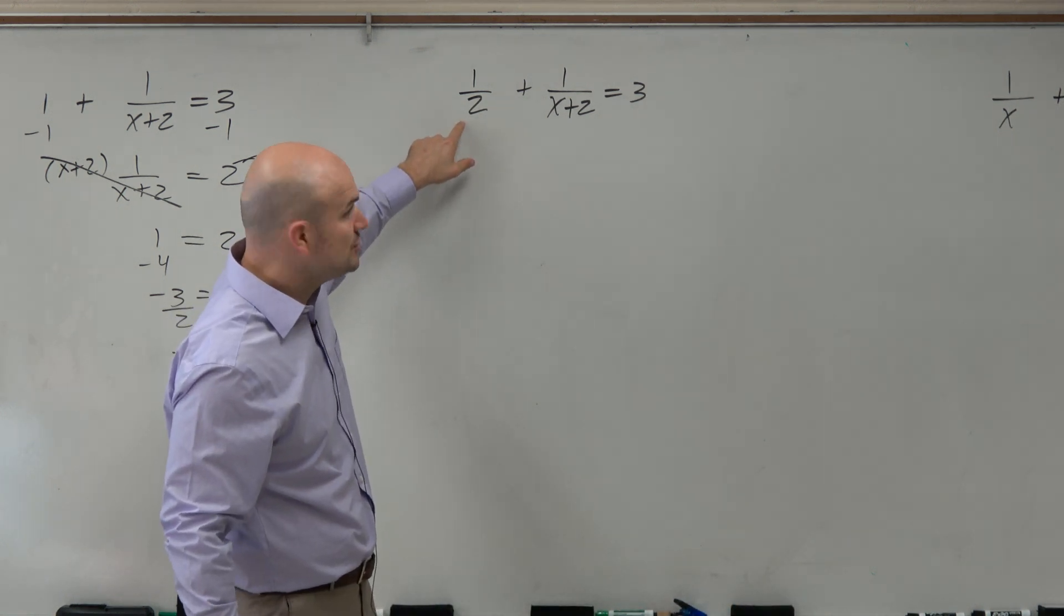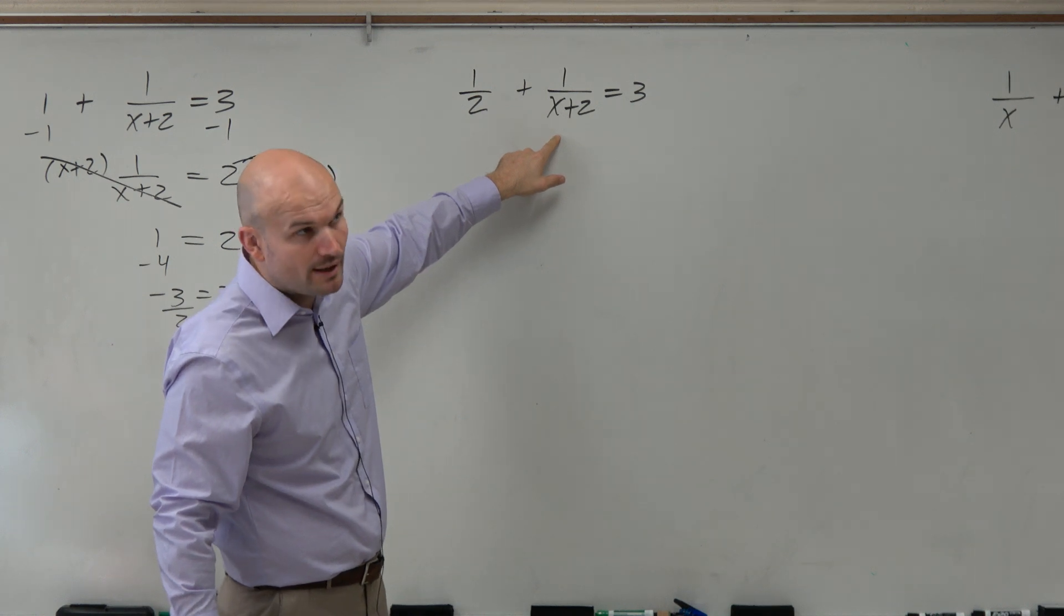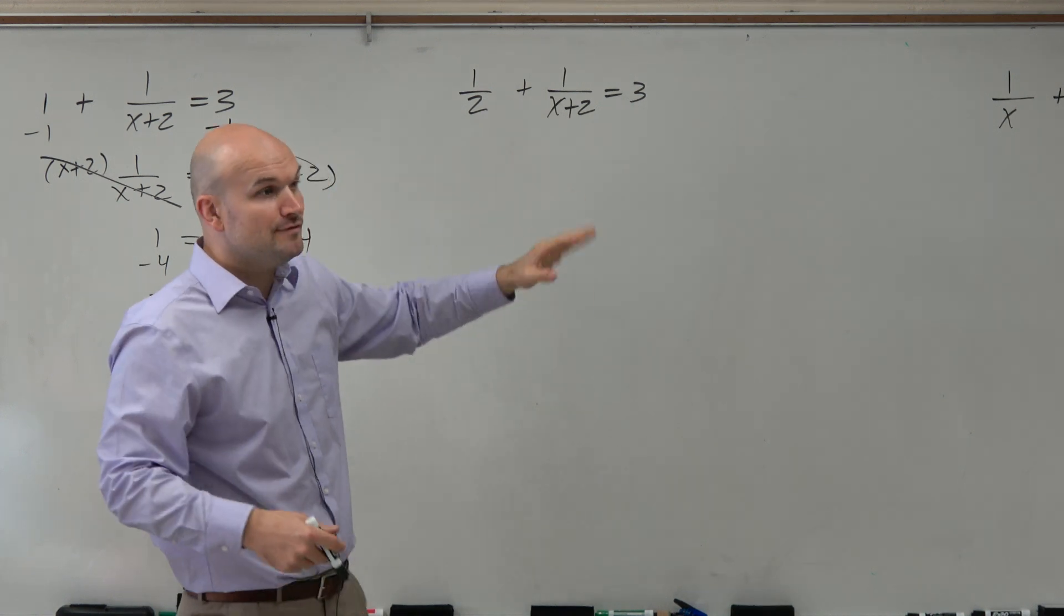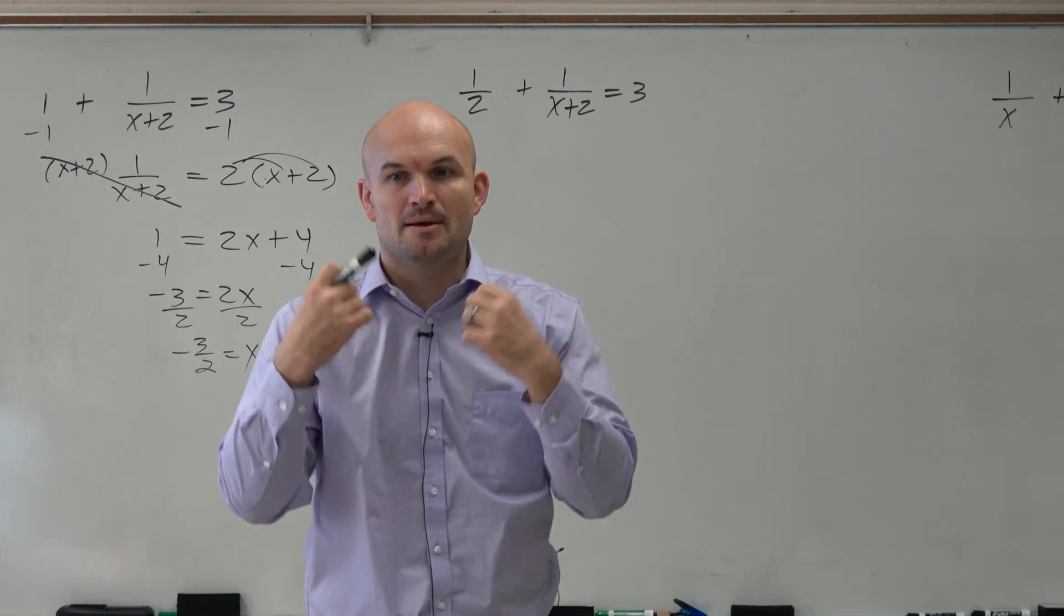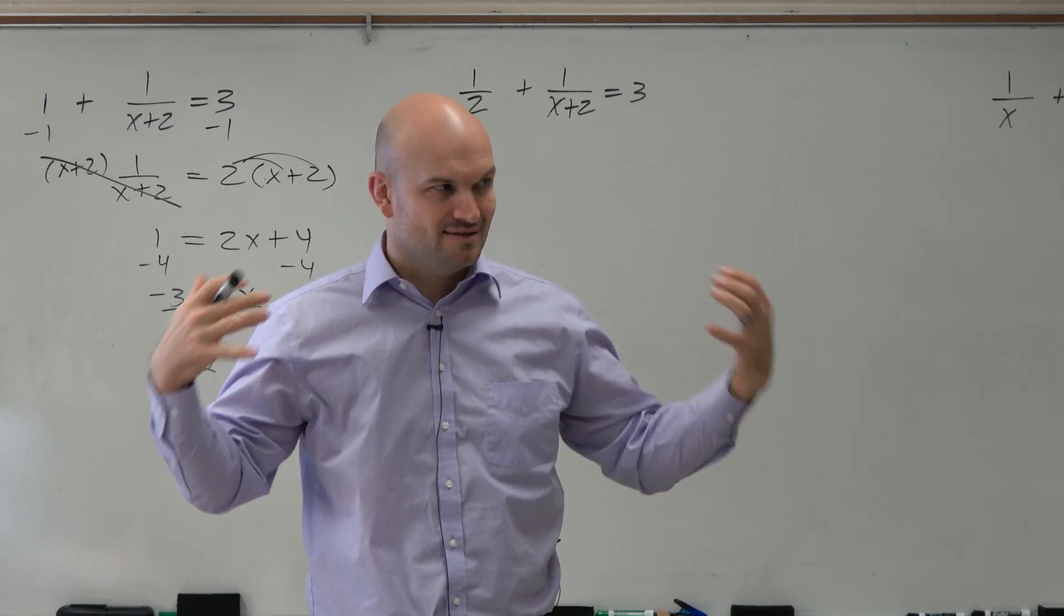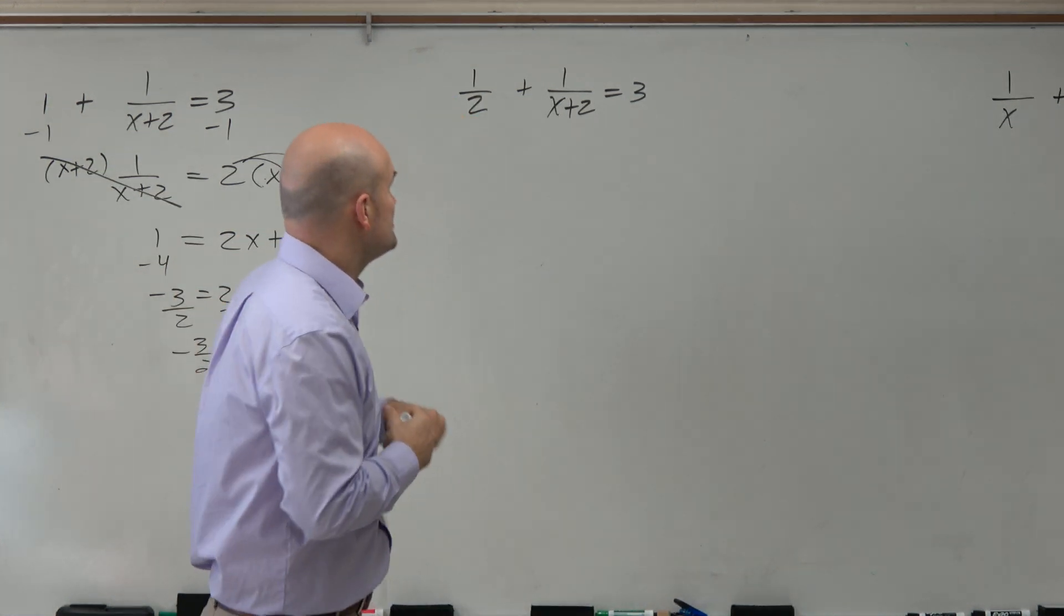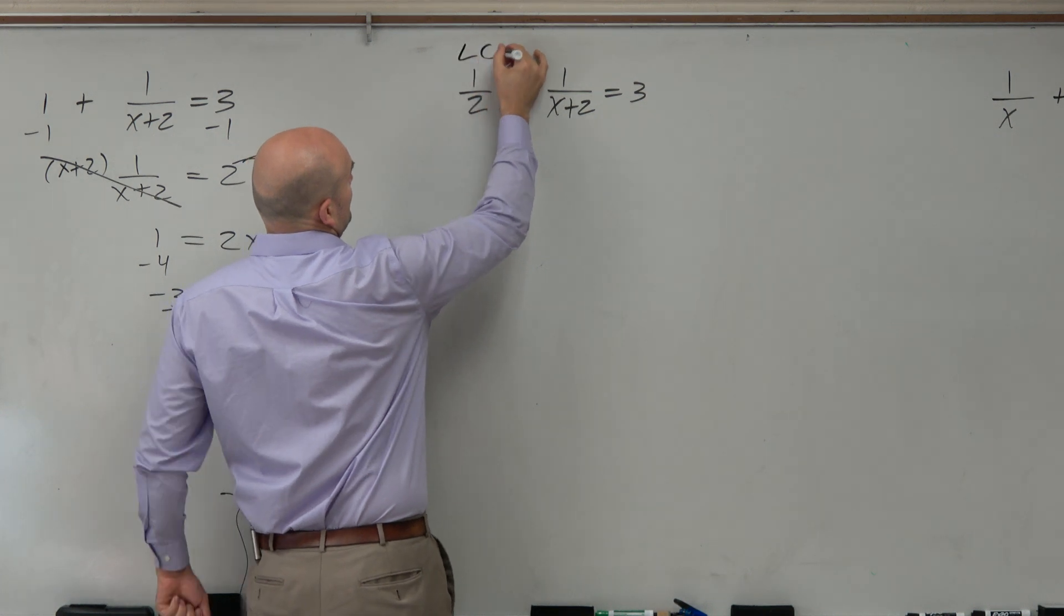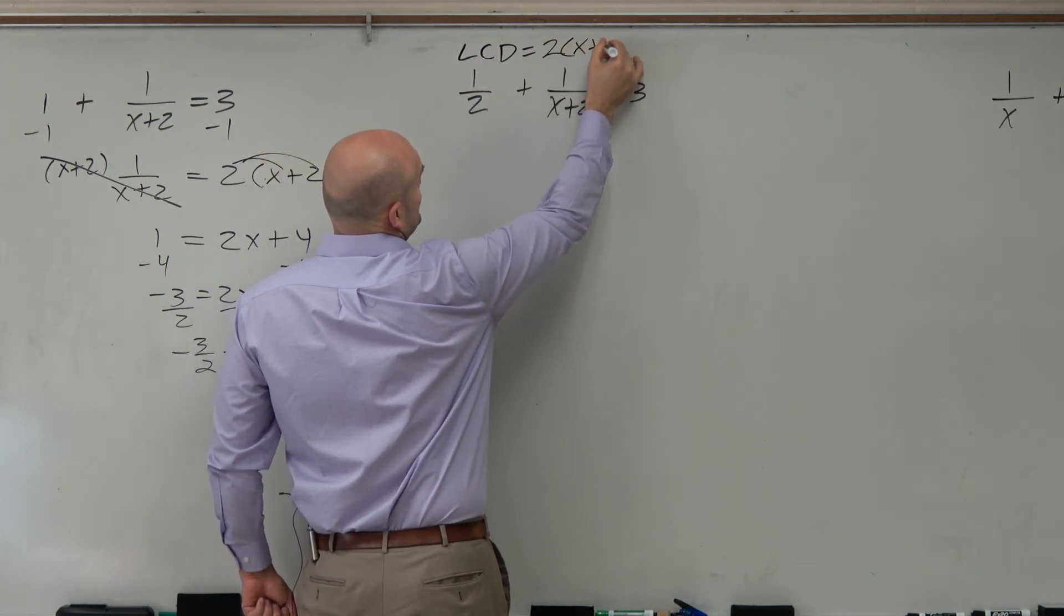The factors here are 2 and 1. This one would be x plus 2 and 1. So the LCD, if they don't have any common factors, is just the product of the two denominators. In this case, my LCD is 2 times x plus 2.